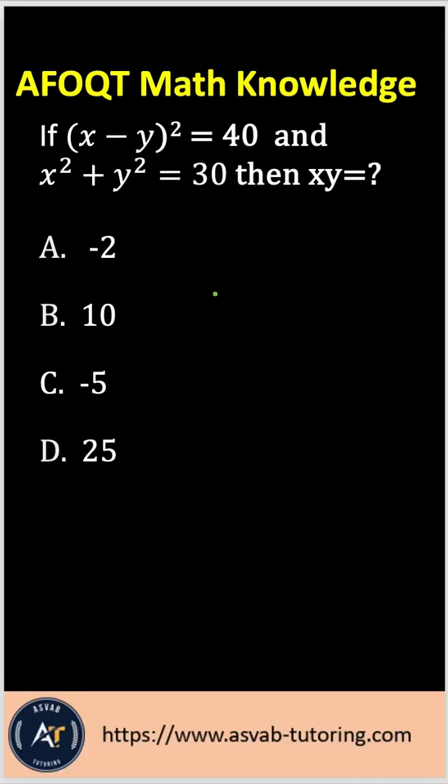Let's practice another Air Force Officer Qualifying Test AFOQT Math Knowledge question. The question says if parenthesis x minus y parenthesis squared equals 40 and x squared plus y squared equals 30, then what is xy equal?